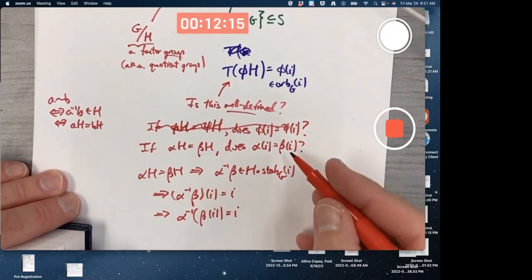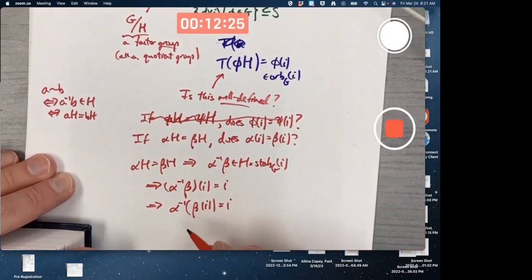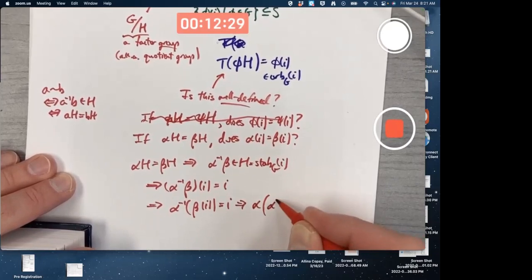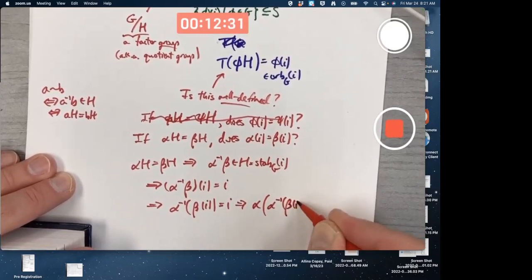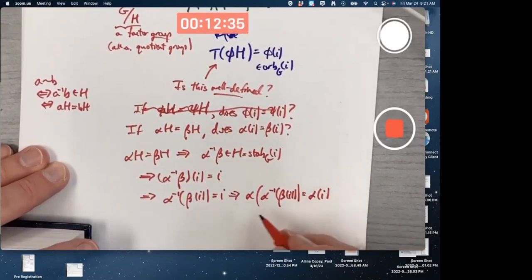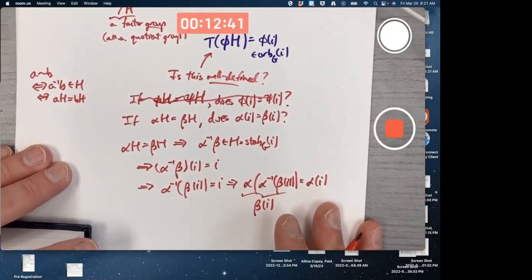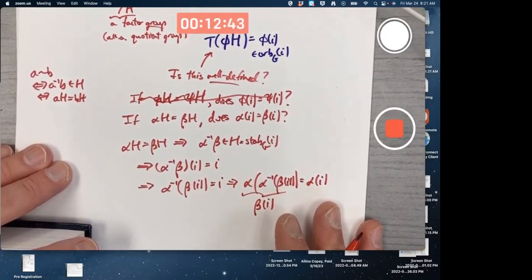without looking, what do you do at this point? Think about your goal. Apply alpha to both sides, right? Alpha of alpha inverse of beta of I equals alpha of I. But yes, this simplifies to beta of I because alpha and alpha inverse are inverse functions. That does it.